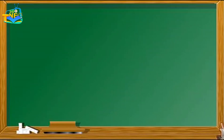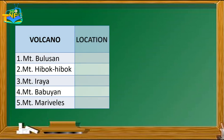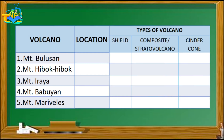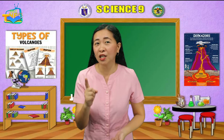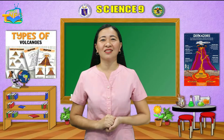The table is divided into three columns: first, list of volcanoes; second, location; and third, types of volcano. Put a checkmark to classify it. Answer and copy the given table on a separate piece of paper. I will give you 5 minutes to finish this activity.